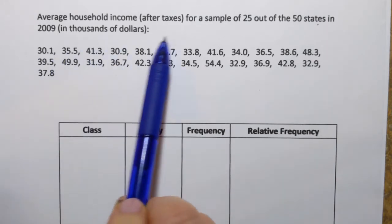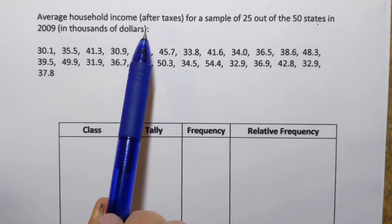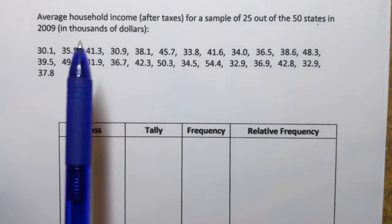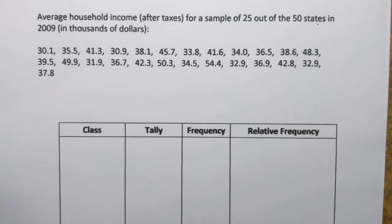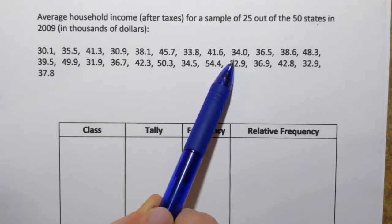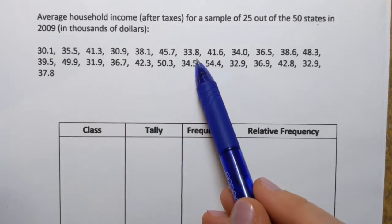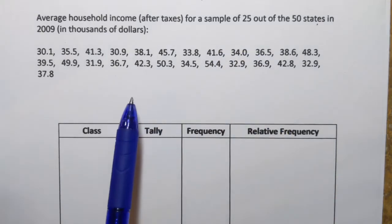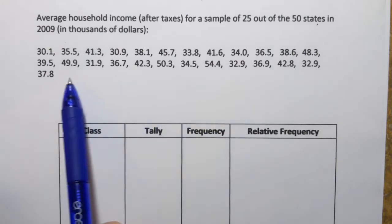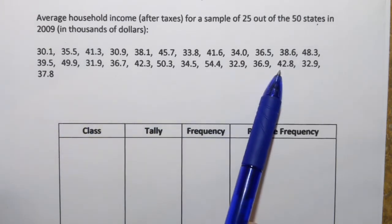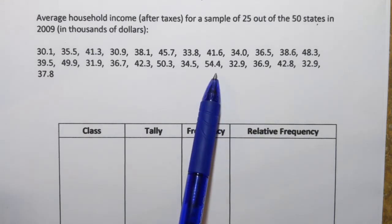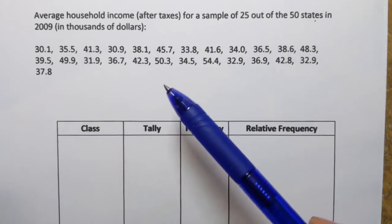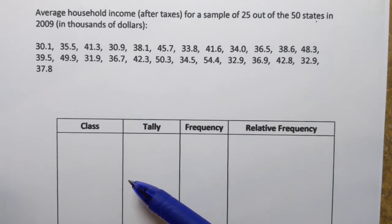Here we have a data set that represents average household income after taxes for a sample of 25 out of 50 states in 2009 in thousands of dollars. So each number in this data set represents average household income in thousands of dollars for one out of 25 states. Right away, you can see it's pretty hard to intake this information when it's presented to us as a list of numbers. And it's only 25 numbers. Can you imagine if we had 2500 numbers? So let's organize this data and put it in the frequency and then relative frequency table.